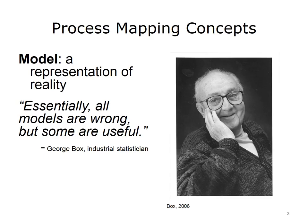As such, a model can never encompass reality, only the part represented in the model. For example, a toy remote control car represents the shape and maybe color of the make and model after which it is fashioned. The toy also moves on wheels like the real car. However, there are many ways in which the toy is not an exact replica of the actual car.